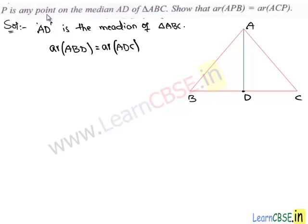Similarly, we are given a point P on median. So we suppose this is the point P and we join the vertex B and C to P. Now we got a triangle BPC.